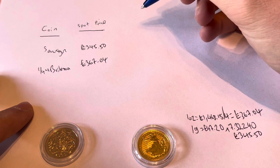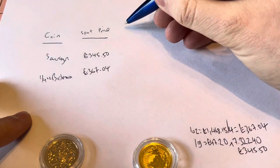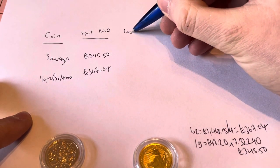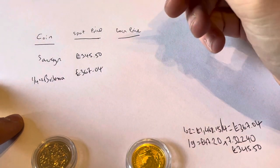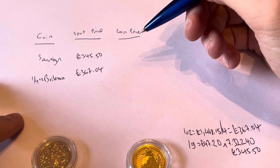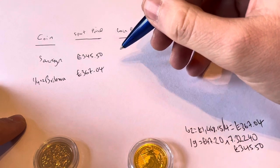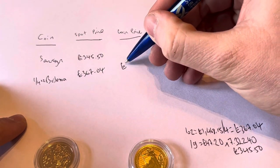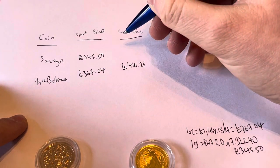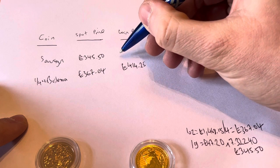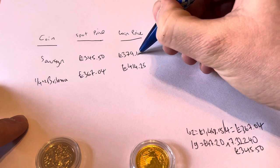And then the next column I'm going to do is the actual price of the coin, coin price. I only bought these coins a few days ago, so I'm going to use the exact price I bought them at. So the Britannia came in at £414.25. And the sovereign came in at £379.40.